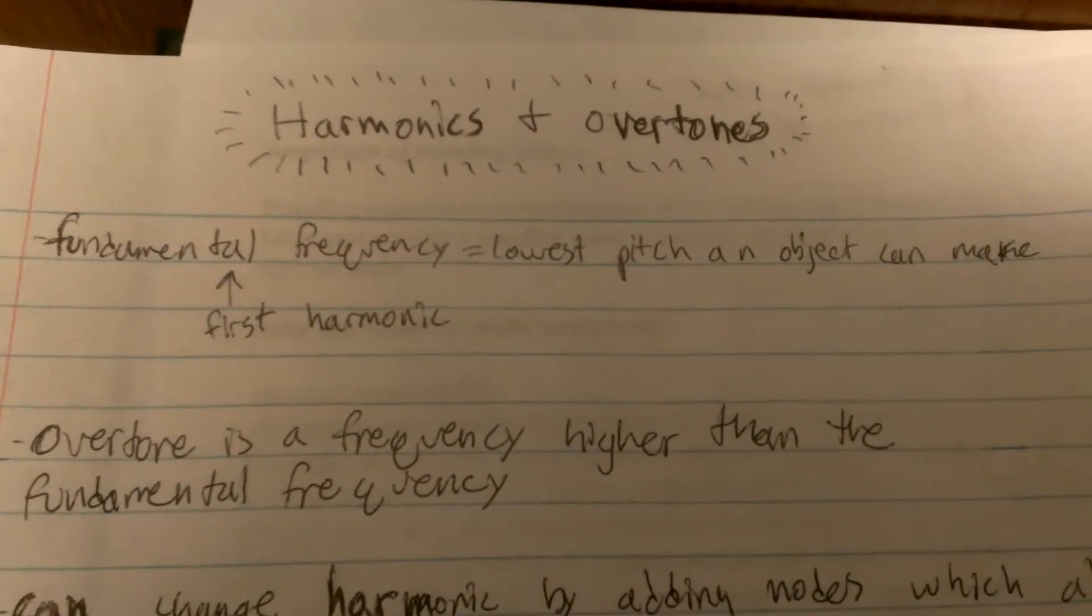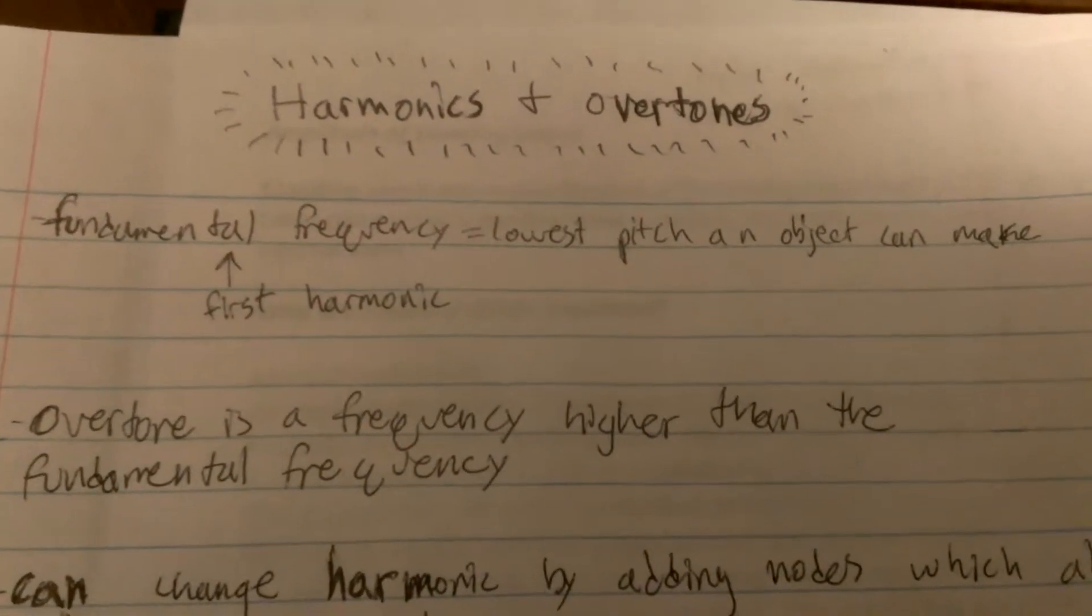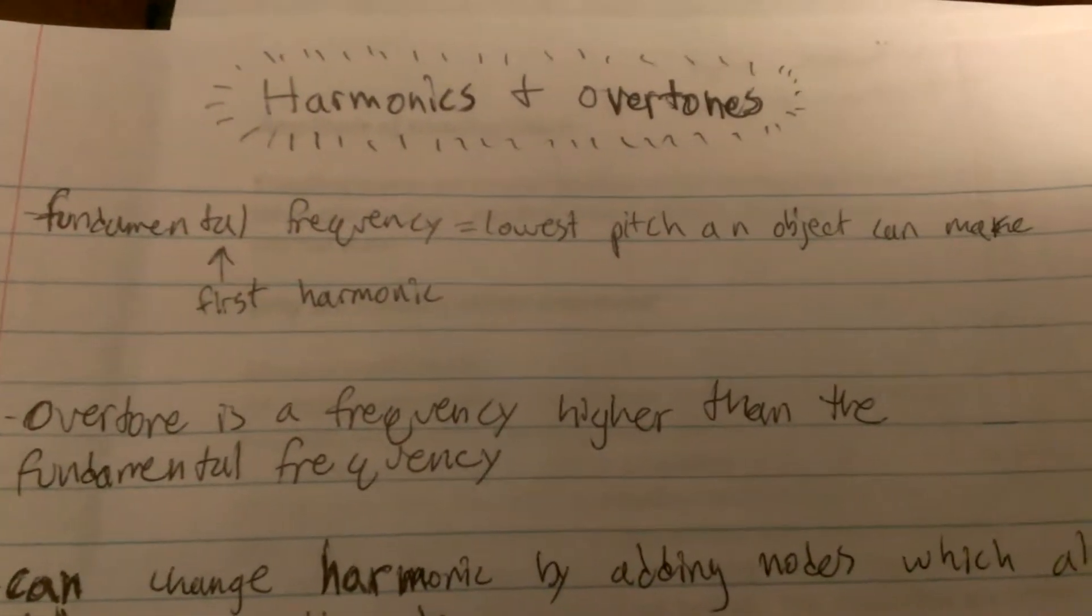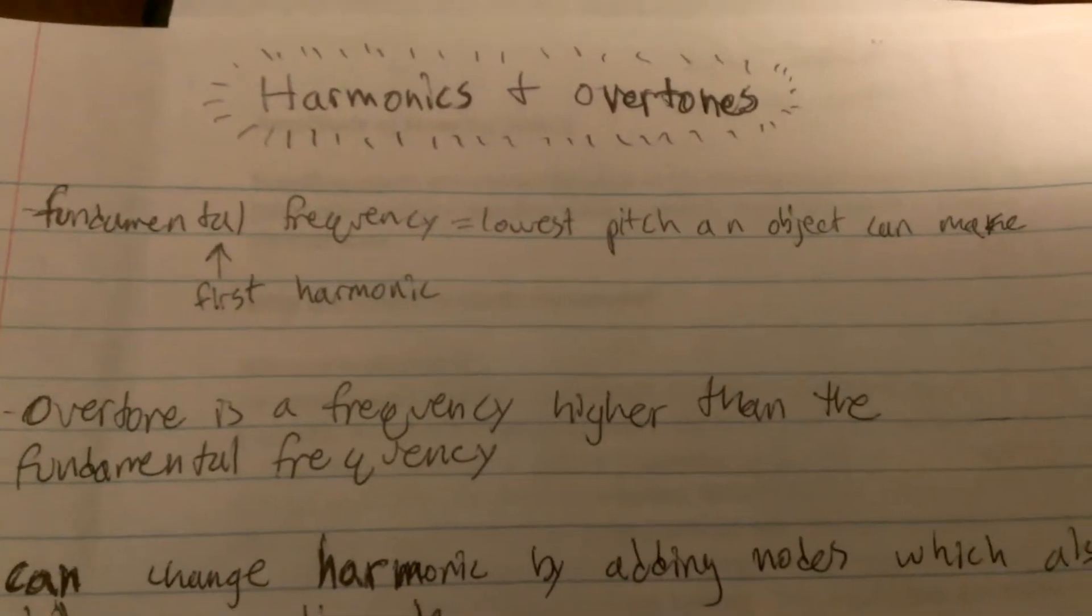Hello, today I'm here to talk to you about harmonics and overtones. Harmonics are standing wave patterns that are only created within an object or instrument at specific frequencies of vibration.